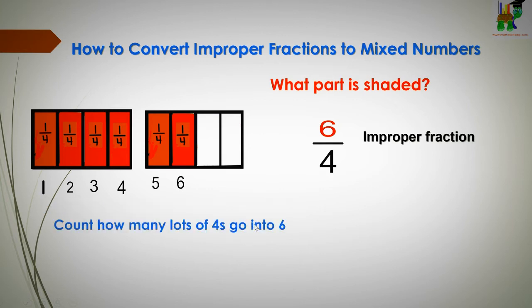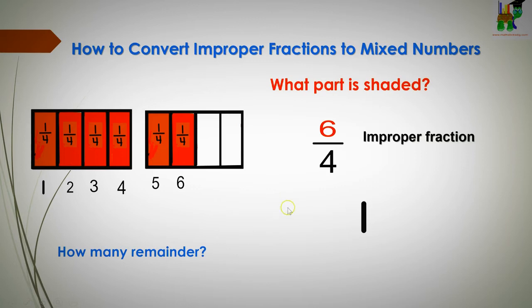You're going to count how many lots of fours goes into six and how many are left over. So in these shapes here you've got one whole shape which is shaded and you have two quarters remainder. This is your mixed number.